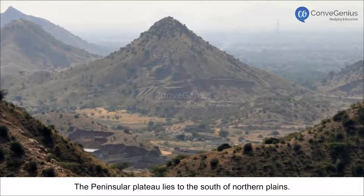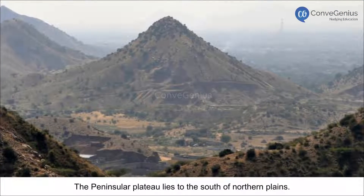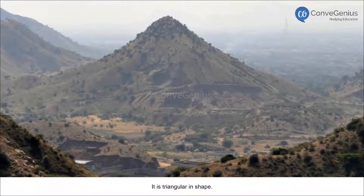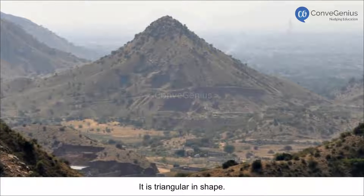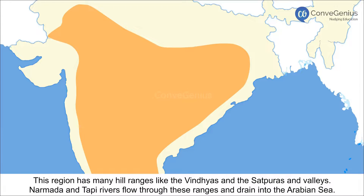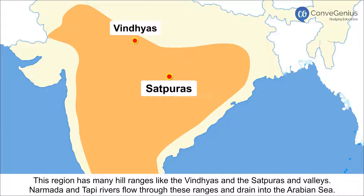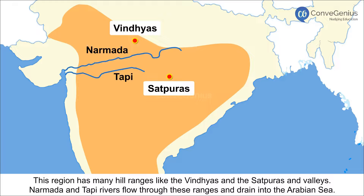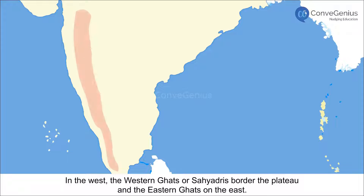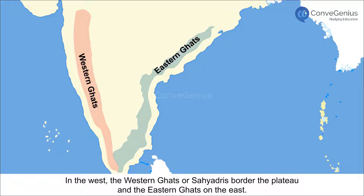The Peninsular Plateau lies to the south of the Northern Plains. It is triangular in shape. This region has many hill ranges like the Vindhyas and the Satpuras and valleys. The Narmada and Taapi rivers flow through these ranges and drain into the Arabian Sea. In the west, the Western Ghats or Sahyadri borders the Plateau, and the Eastern Ghats on the east.